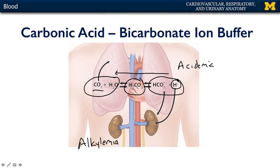Conversely, if blood pH is elevated — that's alkalemia — the equation can shift to the right, and bicarbonate or protons can be eliminated or, depending on the conditions, conserved in the nephrons of the kidneys. This is a rather complex yet elegant solution to maintaining a range of pH that's important for the proteins of the blood, and it involves the cardiovascular system, the respiratory system, and the urinary system.